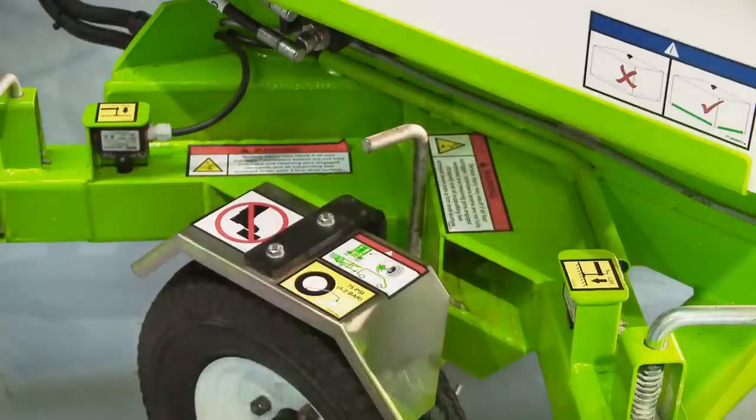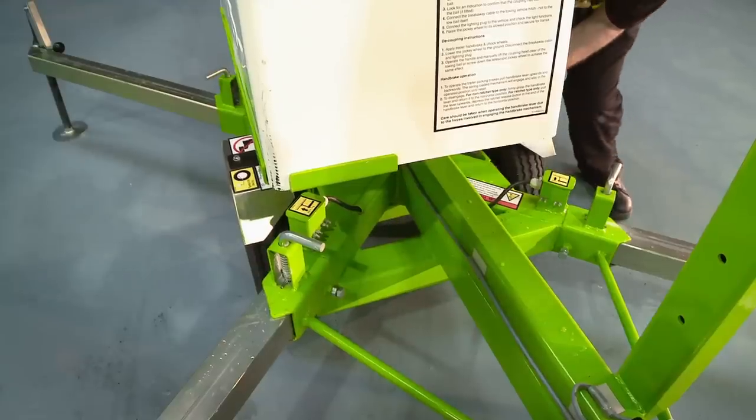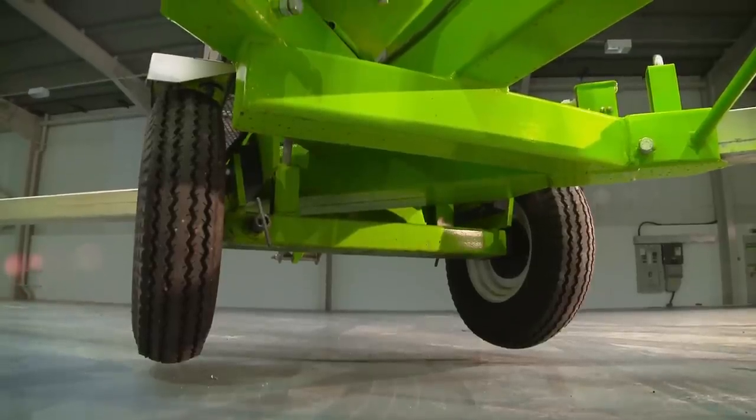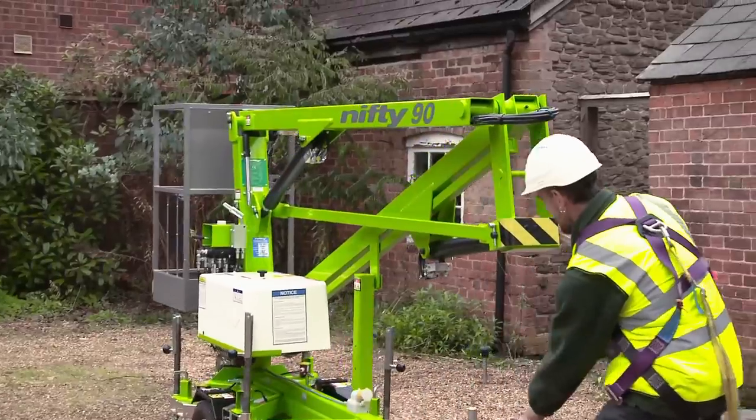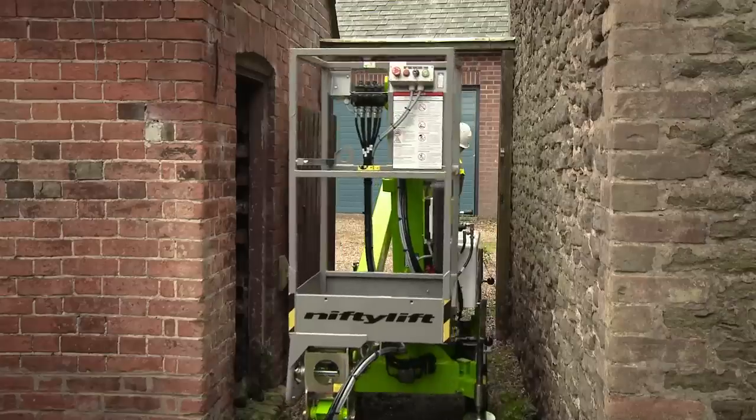It also has a telescopic axle, which retracts to bring the stowed width down to just 0.75 metres, allowing the 90 to fit through narrow gaps and doorways, ideal for working inside and out.